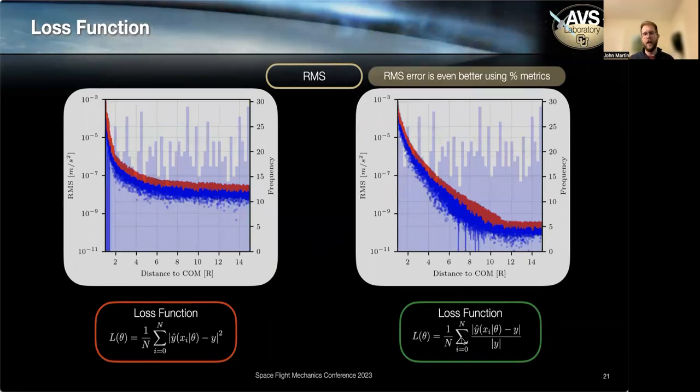Interestingly, by switching to this percent error cost function, we also get better performance in mean squared error, root mean squared error.